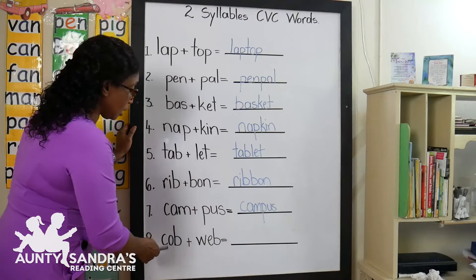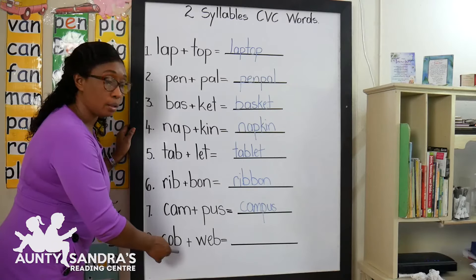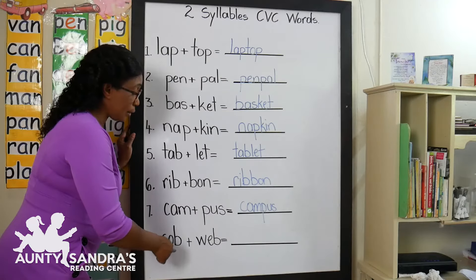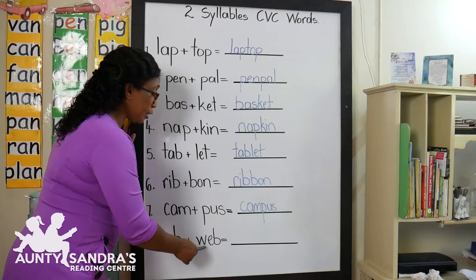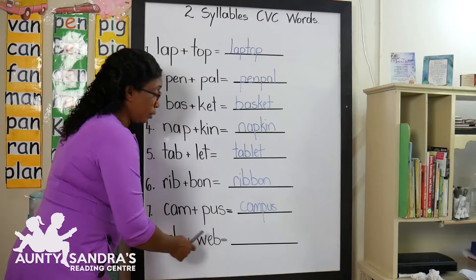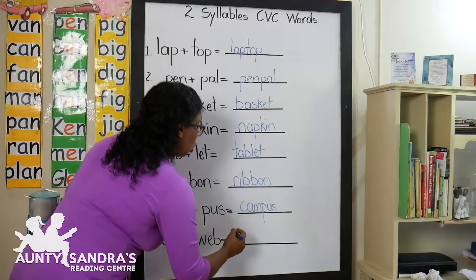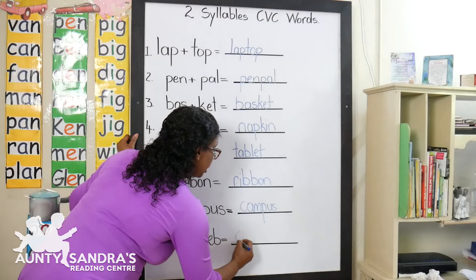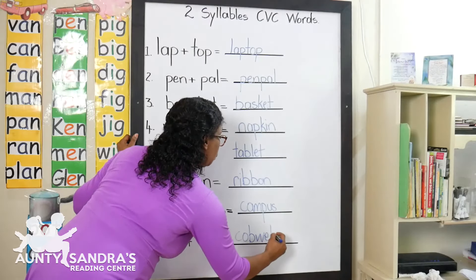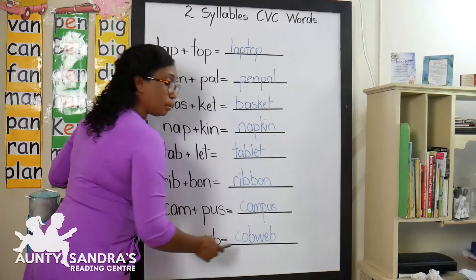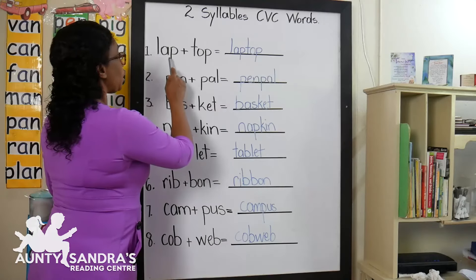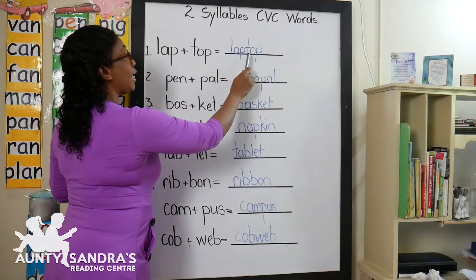The next syllable is C-O-B, Cob. And the second syllable in the word is W-E-B, Web. Now we are going to join our two syllables together and we are going to get Cob, Web. Cobweb. So Lap plus Top equals laptop.